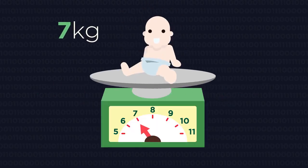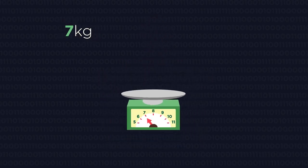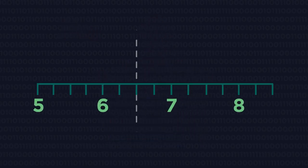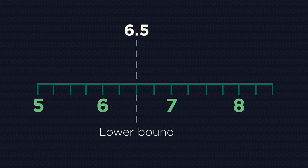This baby weighs 7 kg to the nearest kilogram. What is the smallest possible weight the baby could be for us to round it up to 7 kg? The lower bound is 6.5 kg. Anything less than 6.5 would have been rounded down to 6.